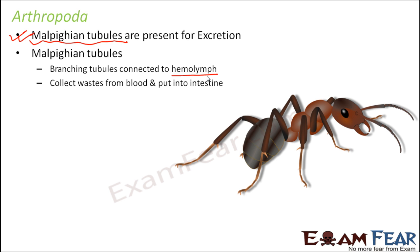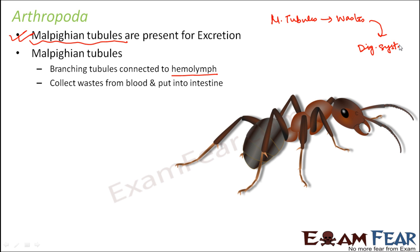The Malpighian tubules collect waste from the hemolymph and put it into the intestine. The hemolymph contains waste materials along with other useful substances. Since the branching tubules are in connection with the hemolymph, the Malpighian tubules take the waste materials from it and pass them to the intestine — that is, to the digestive system. Once passed to the digestive system, the waste materials are discharged by the process of ejection, in the form of feces.